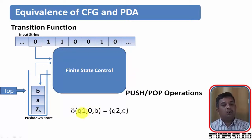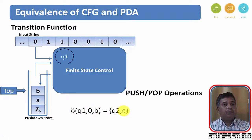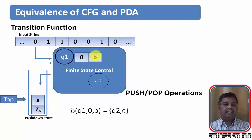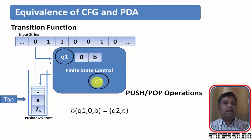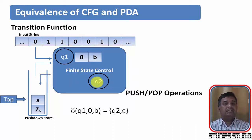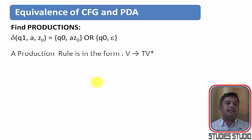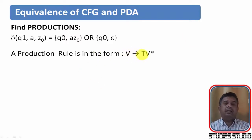If the transition contains only a pop operation — that is, epsilon is pushed — for example delta(Q1, 0, B) = (Q2, epsilon), it means nothing is pushed onto the stack, so we have only popped. These transition concepts need to be used in constructing productions. The production will be based on forms like delta(Q1, A, Z0) = (Q0, A, Z0) or (Q0, epsilon), and both cases need to be handled.